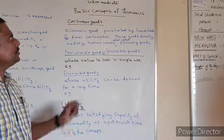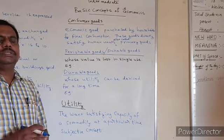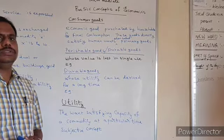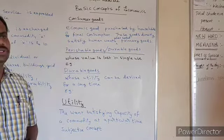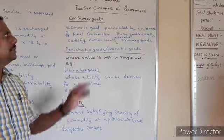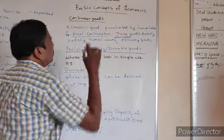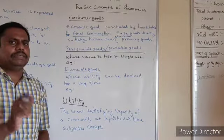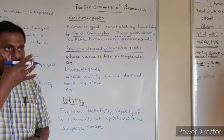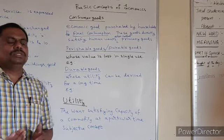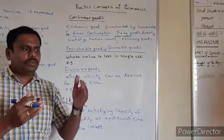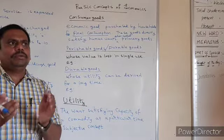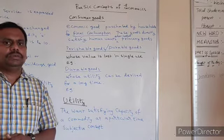Previously we have seen what goods are, what free goods are, what economic goods are, what capital goods are, and what intermediary goods are. Now, what are consumer goods? A consumer good is an economic good purchased by households for final consumption. In the case of intermediate goods, rice is an example — you produce it and with that you can satisfy your want directly.